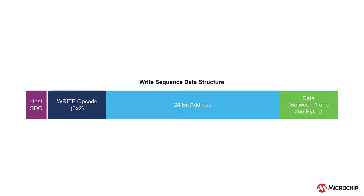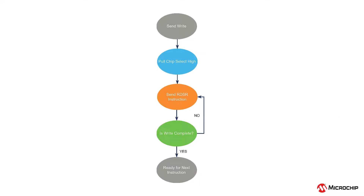Anything larger than this will overwrite the data that has just been written, as the data will wrap around the page. After the write has been sent, the EEPROM will need up to 5 milliseconds to complete the write and may not accept any more write commands until this process is complete. The user may choose to either wait this full 5 milliseconds, or poll the status register, same as before, for the completion of the write command.